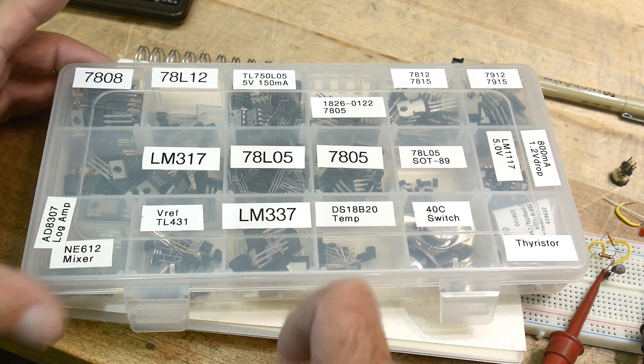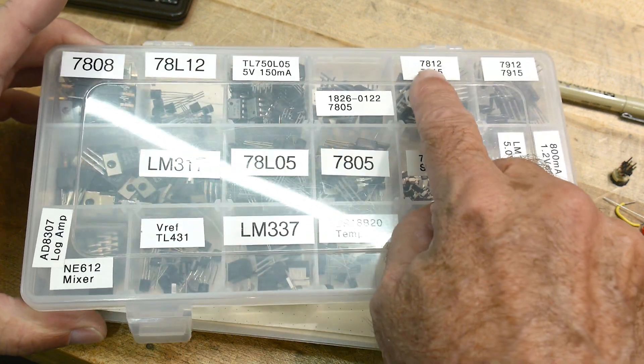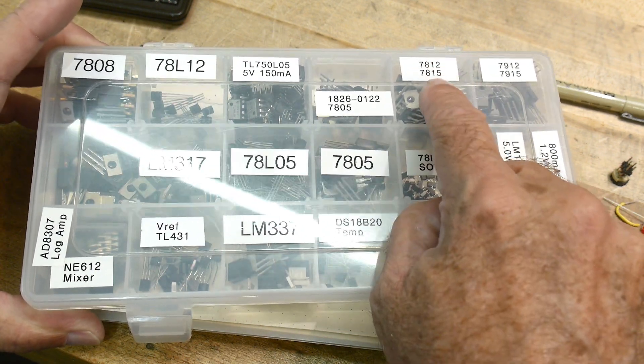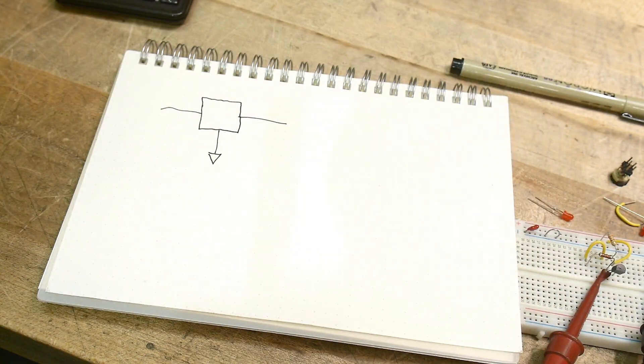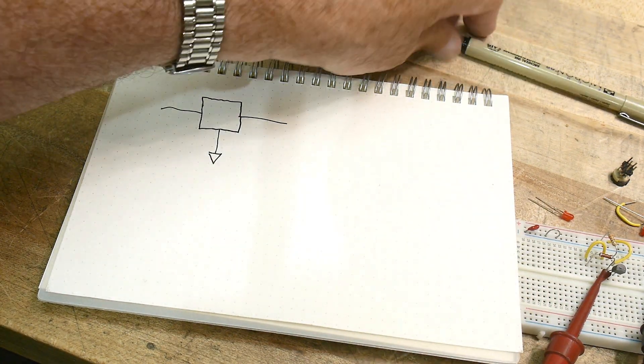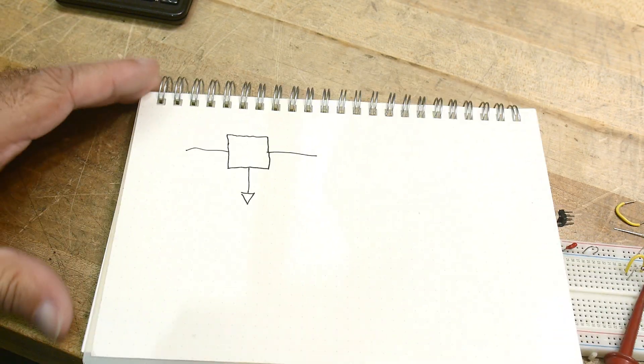So yeah, negative ones. Here's a 12-volt and 15-volt positive, 12-volt, 15-volt negative. So I've got a bunch of them. But I want to show you some tricks today that you may or may not know.